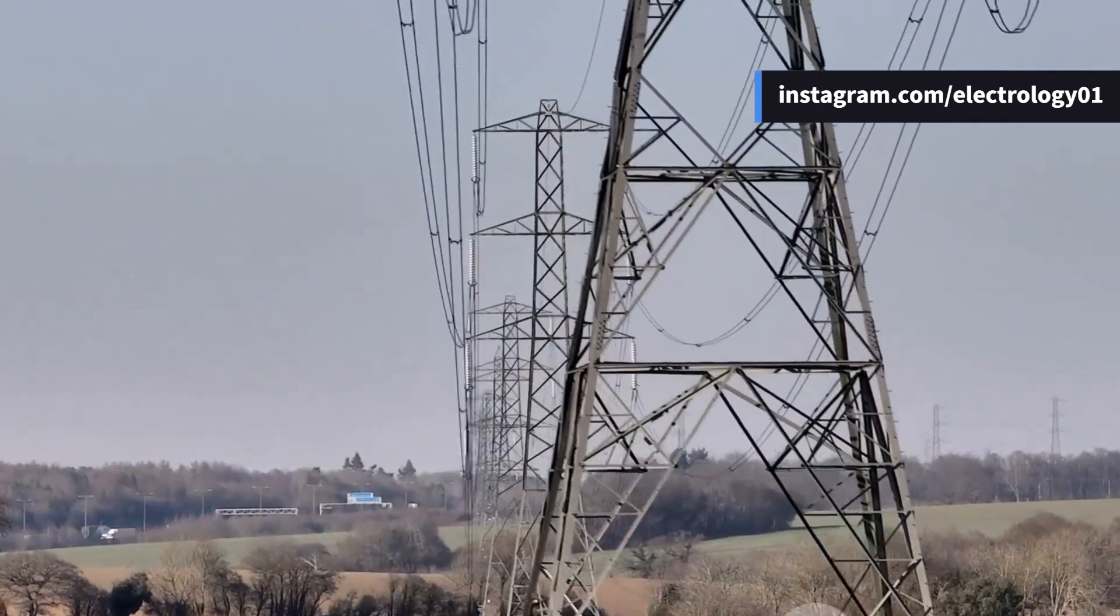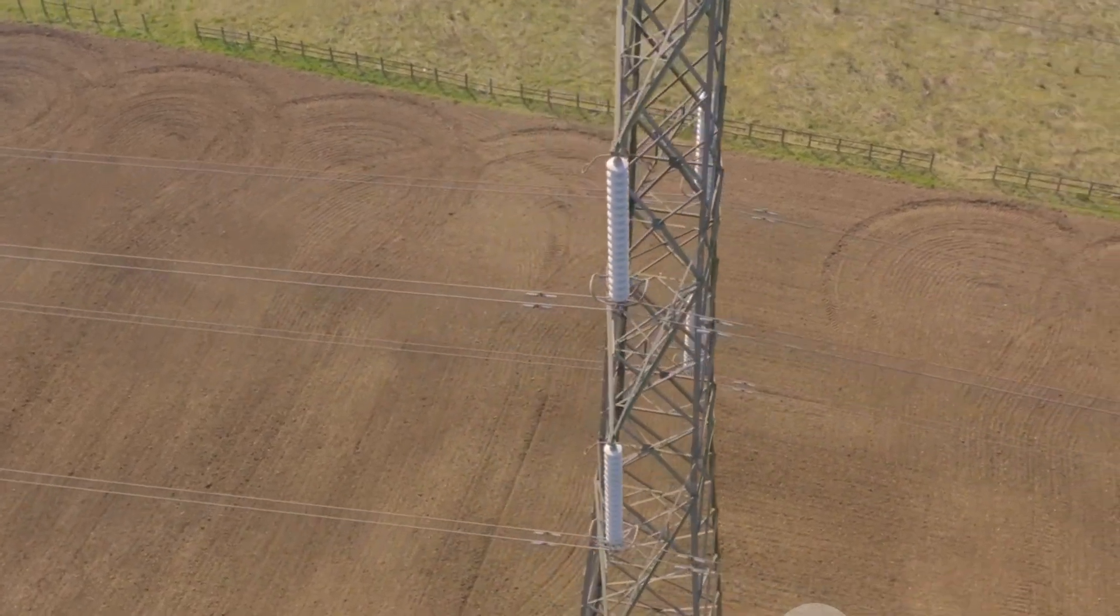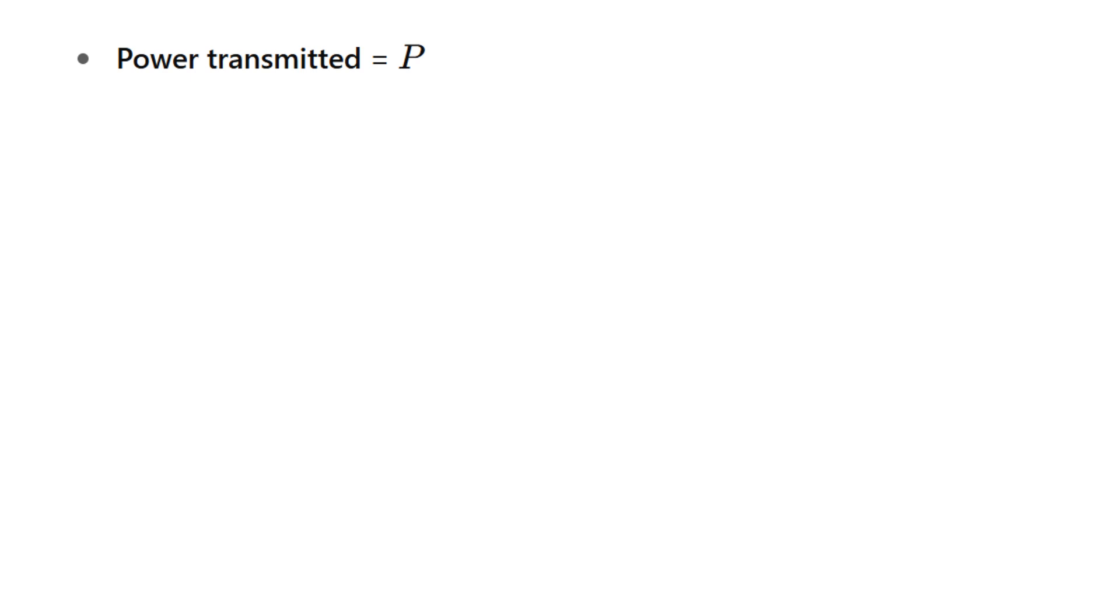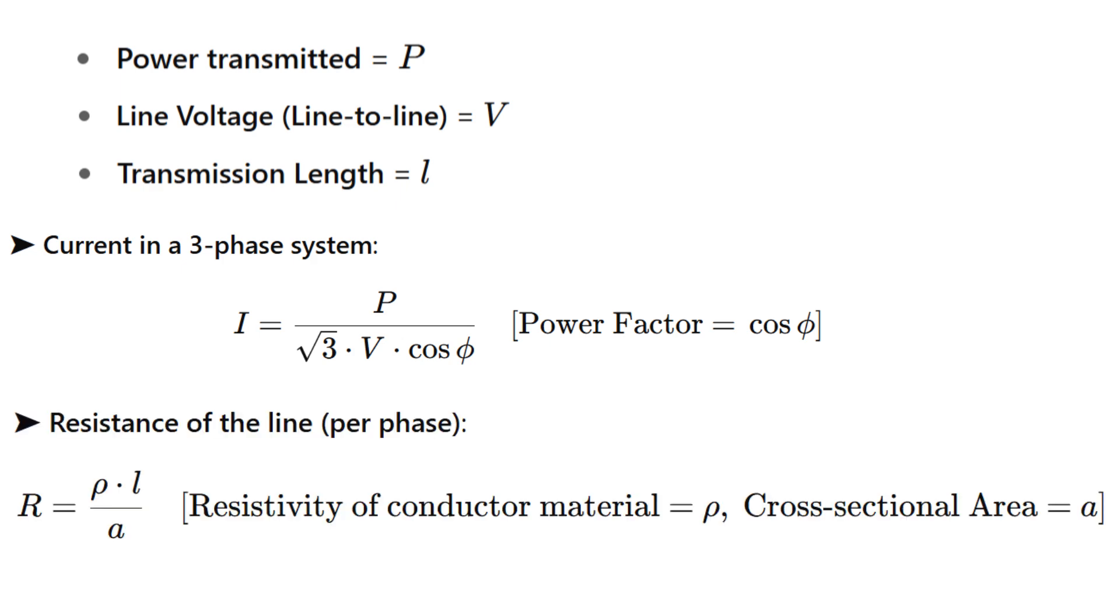First and foremost, high voltage reduces the volume of conductor material required. Let's understand this with a bit of math. Suppose you're transmitting a certain amount of power denoted by P at a line voltage V over a length L. Now the load current I is given by I equals P divided by root 3 times V times power factor.